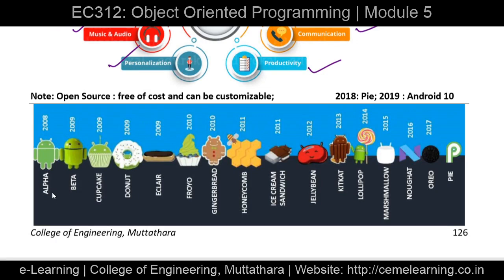Android has gone through many versions, including Alpha, Beta, and named releases such as Lollipop, Marshmallow, Nougat, Oreo, Pie, and Android 10.